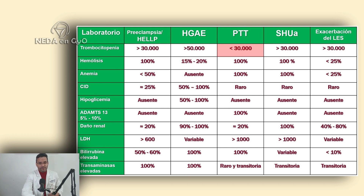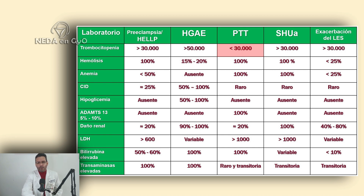For hemolysis: HELLP syndrome presents hemolysis in 100% of cases. Acute fatty liver of pregnancy, only 15 to 20% of patients — note the difference. Thrombotic thrombocytopenic purpura: 100% of patients. Atypical hemolytic uremic syndrome: 100%. Lupus exacerbation: less than 25% of patients. For anemia (decreased hemoglobin): less than 50% of HELLP cases; absent in acute fatty liver; 100% in TTP; 100% in aHUS; less than 25% in lupus exacerbation.